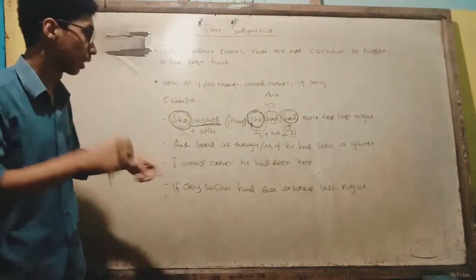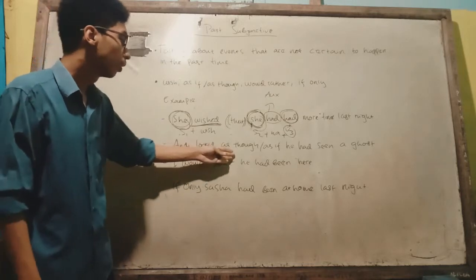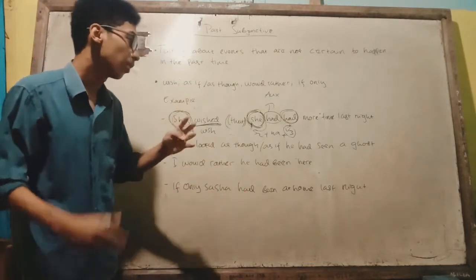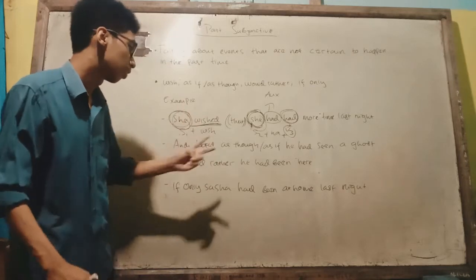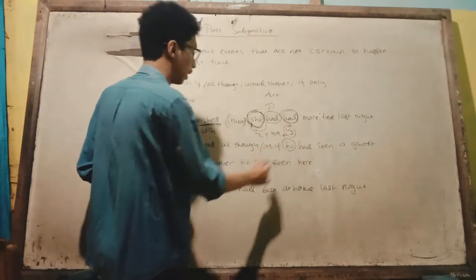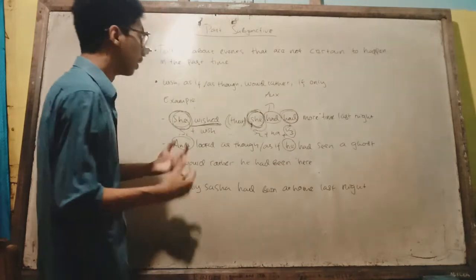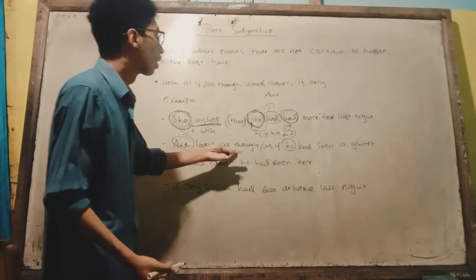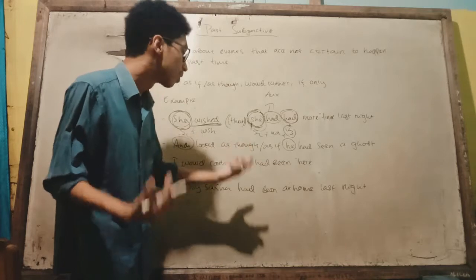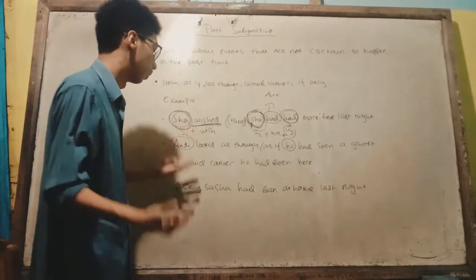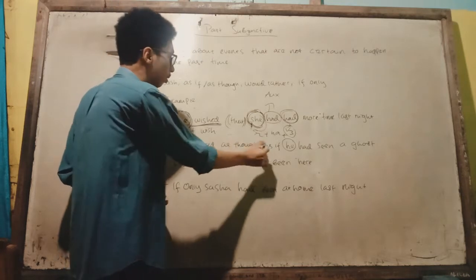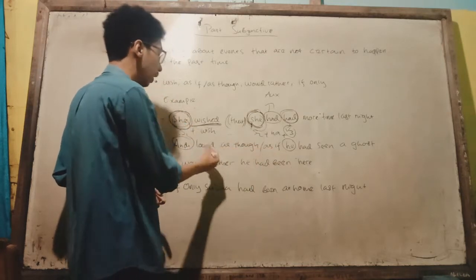Moving to the second example, when we use 'as thought' or 'as if,' we also have two subjects. The first subject is Andy and the second is he. But the difference is that 'as though' and 'as if' are not verbs, so we need to give a verb first before 'as thought' or 'as if.'